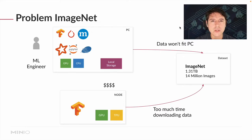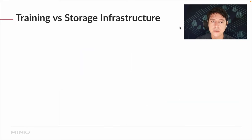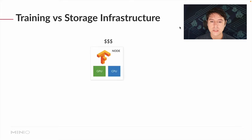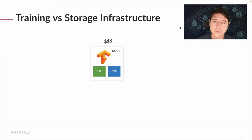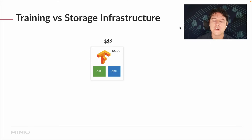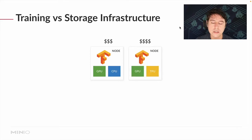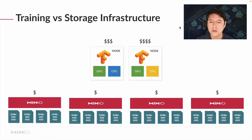Let's zoom in and look at the stages of building a machine learning pipeline and why this is quite important. Compute tends to be quite pricey — whether you're getting VMs with GPUs or CPUs from a cloud provider, or procuring hardware for your data center. Having those machines blocked doing basic operations like loading data in and out is just too expensive, and it gets even worse if you're using TPU machines. Comparing this to storage infrastructure, storage can be more plentiful and is actually cheaper to operate and host.